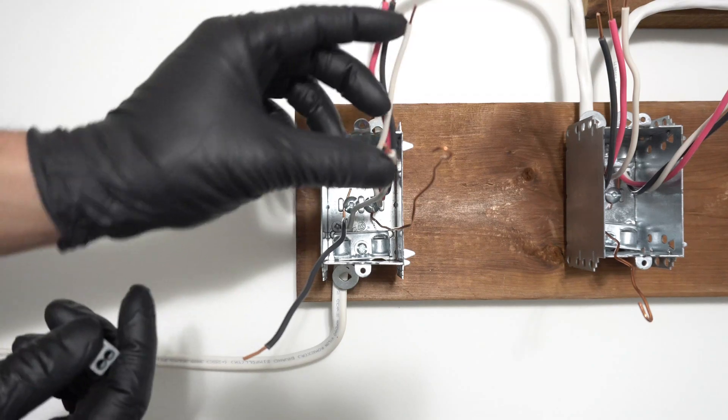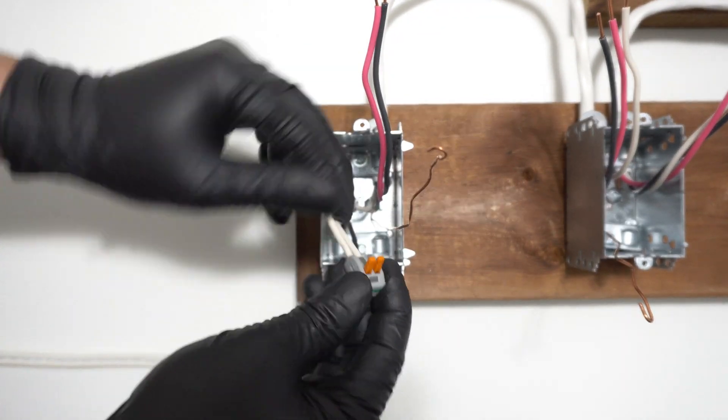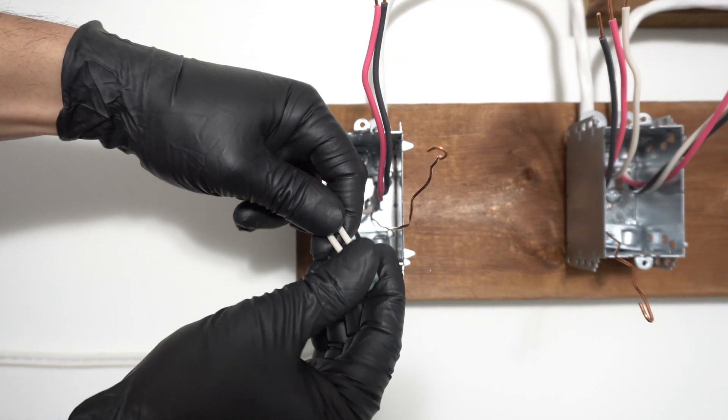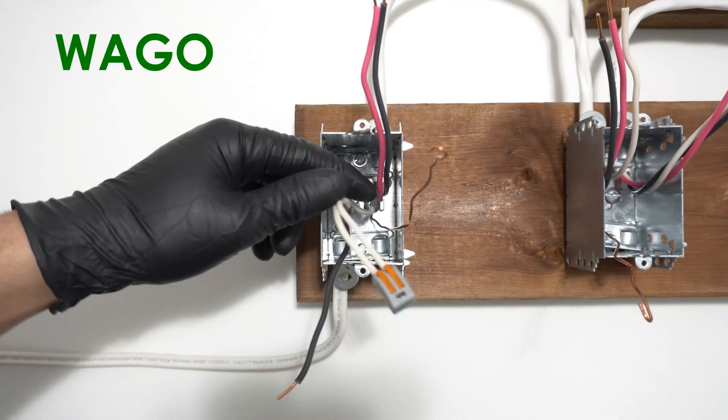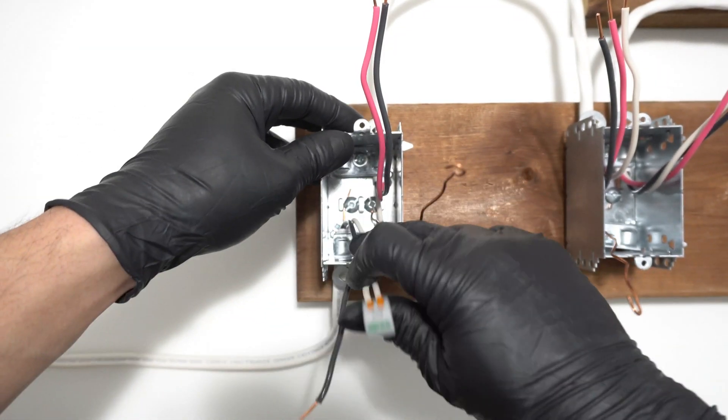You want to splice the neutral wires together. What I'm using right now is called a Wago. It's a wire splice connector. Now we will tuck the wires in the box nicely.